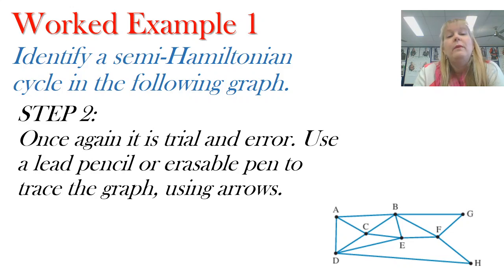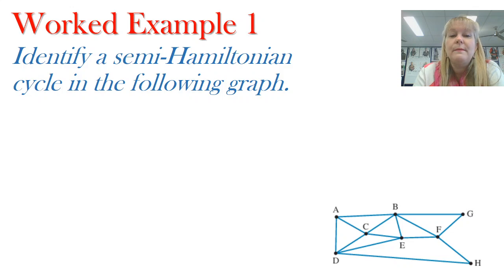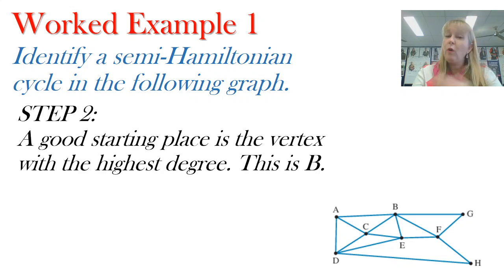We're also going to need the same equipment. We're going to use trial and error. We're going to need maybe a lead pencil or an erasable pen or highlighter, and we're going to trace our way through using arrows. Now, we don't need to worry about the odd or even number of degrees this time. Just look for the vertex that's got the highest degree. And I can see that B has the most pathways coming in and out of it, so that's a great place to start. That's just a little tip.